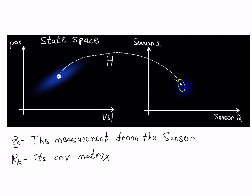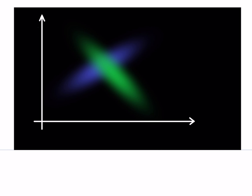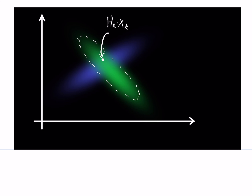rk, meaning the uncertainty or the covariance matrix — each sensor has its own covariance or uncertainty, because each sensor includes inherent noise from its physics. On one hand I have the prediction as stated in the sensor space, which is hk times xk. On the other end I have the actual measurement zk, which also has its own uncertainty, the R matrix.